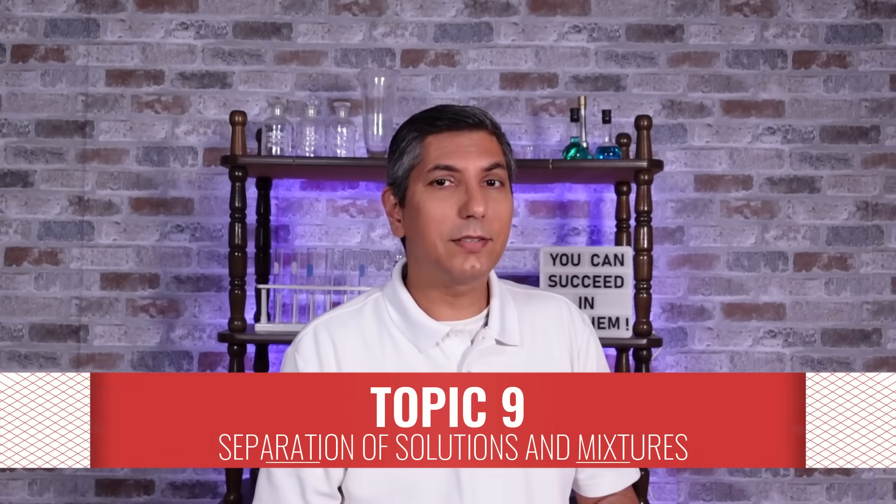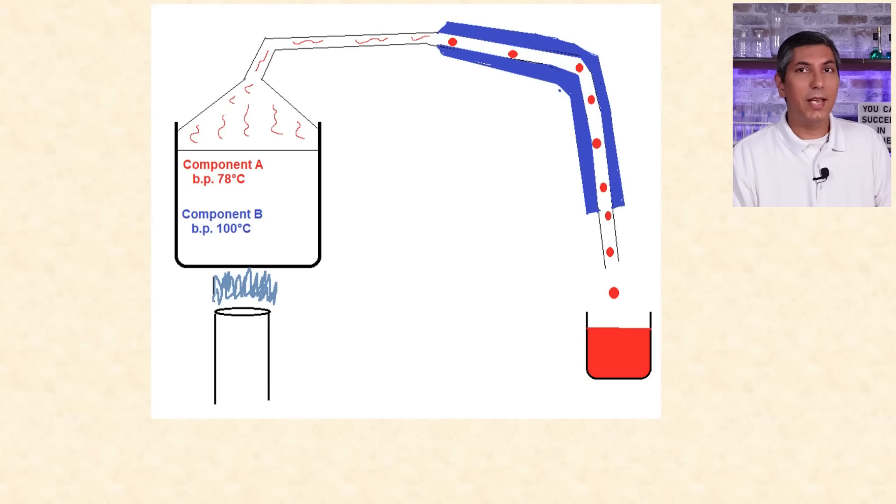There are two primary ways to separate solutions into components in AP Chem. Distillation takes advantage of the fact that different substances have different boiling points, so you can boil the mixture and the different components will boil away at different temperatures. You can collect the steam and condense the components into different containers.